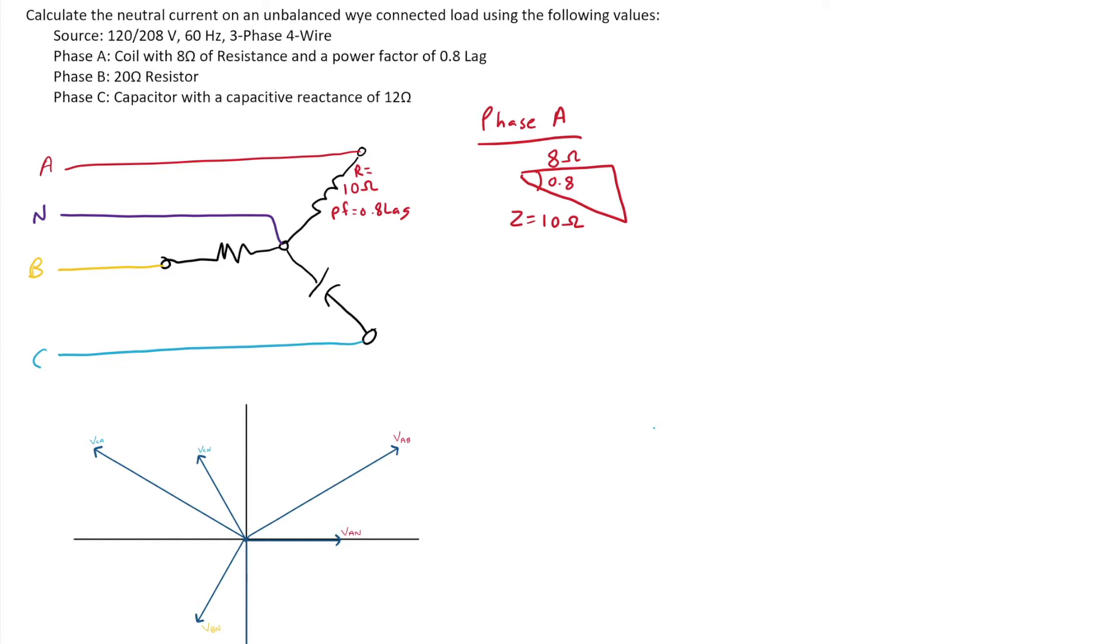Now my phase, so now what I do is I'm going to calculate my current. We know IA to N will be VA to N, my phase voltage divided by my phase impedance. So in this case, it's 120 volts divided by 10 ohms, which gives me 12 amps. So I calculate out 12 amps as my current that's flowing in the phase.